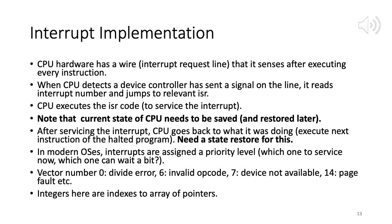Some example interrupt codes: vector number 0 is a divide error (e.g., dividing by zero); vector number 6 is an invalid opcode — if you supply the wrong opcode bits for an instruction; vector number 7 means device is not available; number 14 is a page fault — when you request data not in main memory and it must be fetched from disk. These integers are indexes into the interrupt vector table.